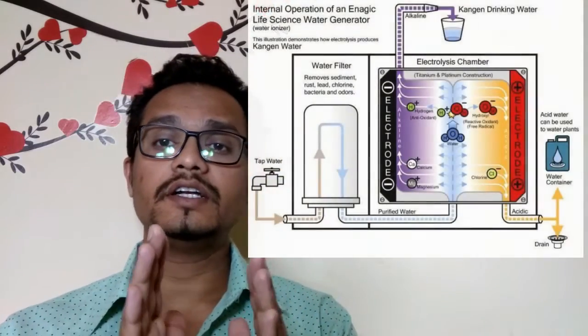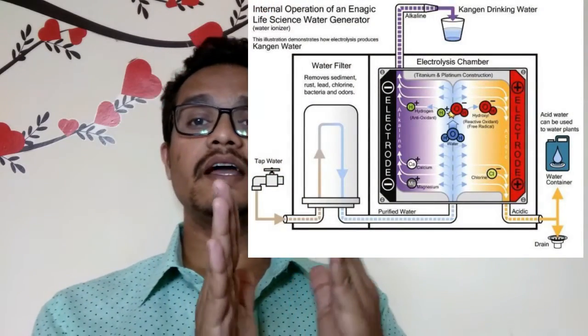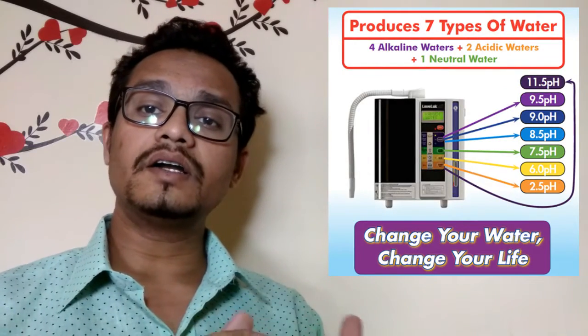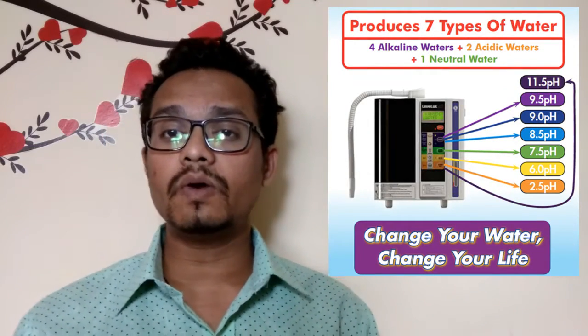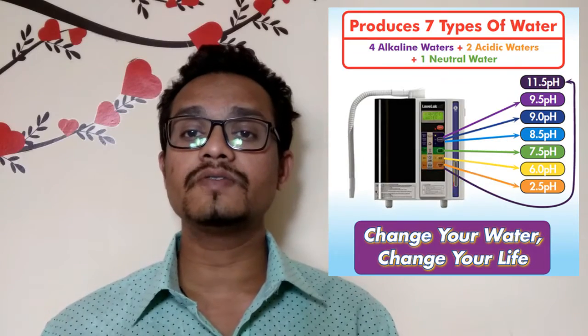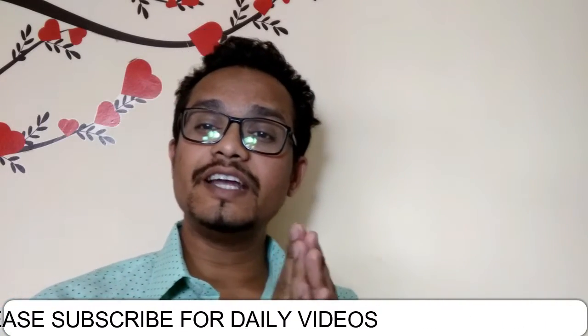The Kangen water ionizer ionizes your water and provides a higher alkaline level. The alkaline level of water ionized by Kangen will be more than pH 10 to 11. If you check the pH of water draining down from the Himalayan ranges, you'll find very high levels of alkalinity.